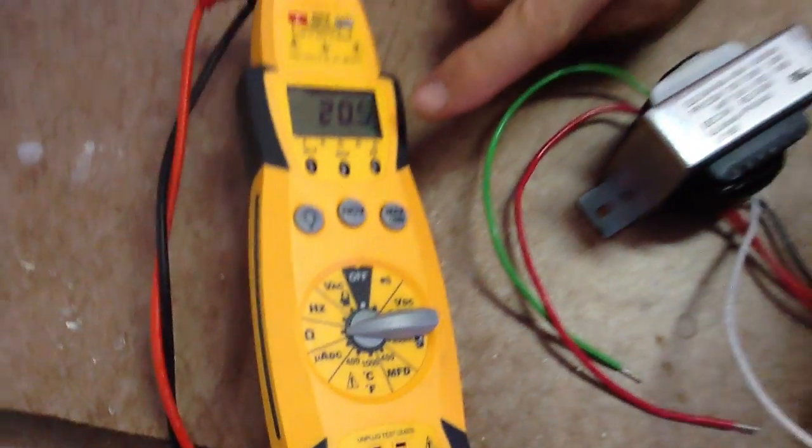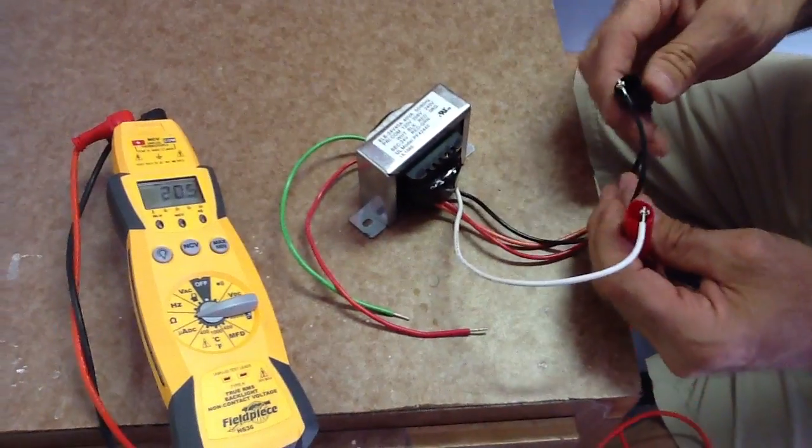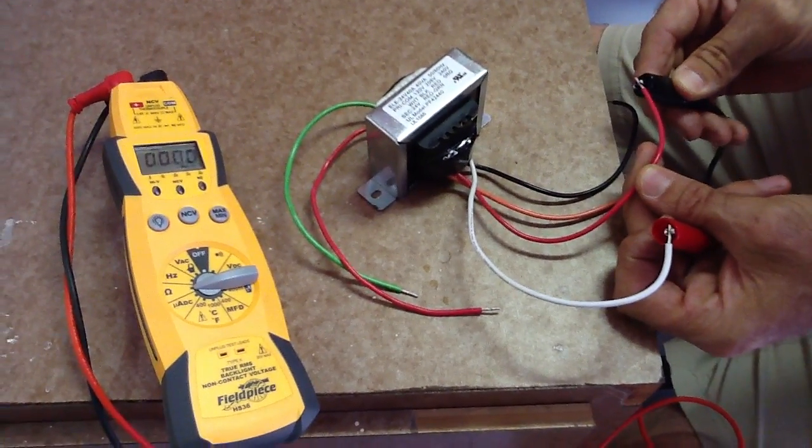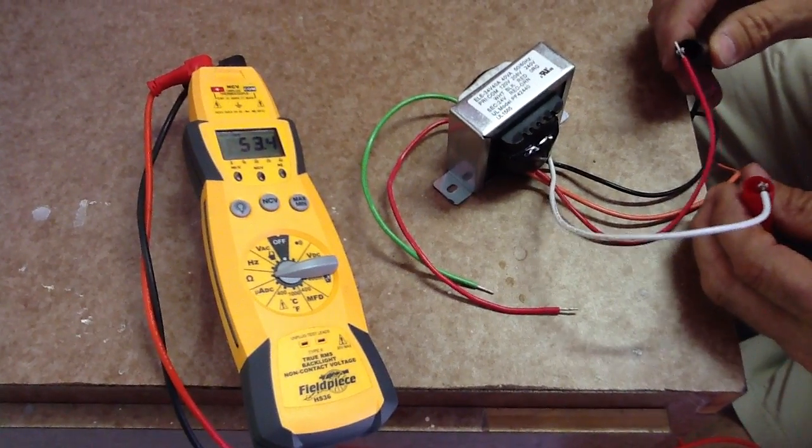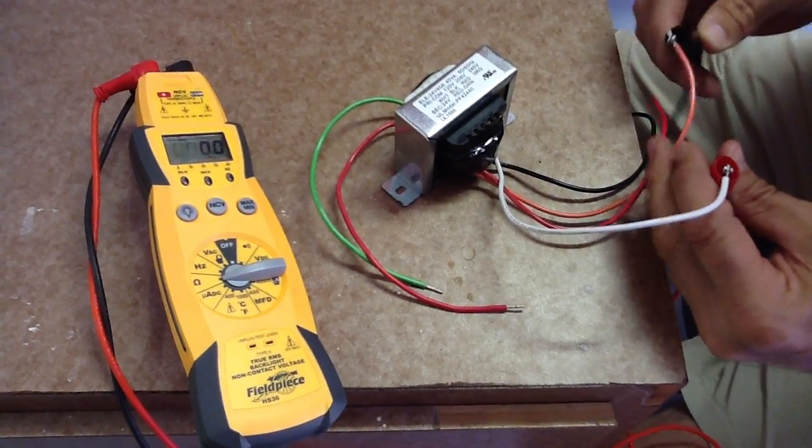So on the black wire we have 20 ohms of resistance. On the red wire it's going to be a little bit more - it's 53 ohms of resistance. On the orange wire it's going to be even more because it's...